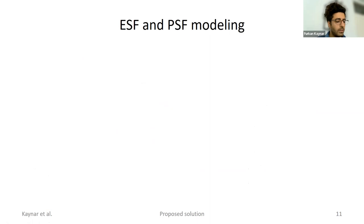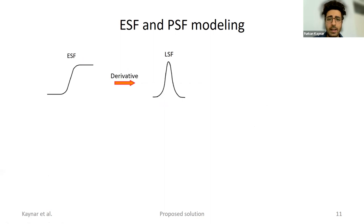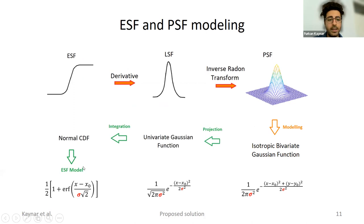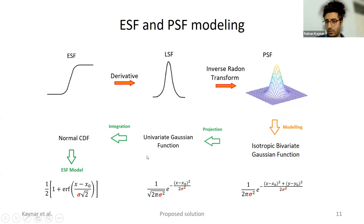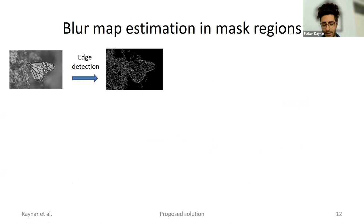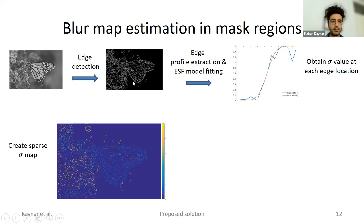To model the PSF, we start with the edge spread function. We analytically obtain the point spread function using derivatives and the inverse Radon transform. We model the PSF with a 2D Gaussian function; in that case, the edge model is a normal cumulative distribution function. What we need to estimate at each edge location is sigma, the standard deviation parameter, which gives the size of the blur kernel. We detect edges, extract edge profiles, and fit this ESF model on the noisy edge profiles using least-squares minimization to obtain sigma at each edge location.